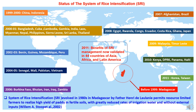In 1999–2000, this method was adopted in China and Indonesia, and slowly spread to Bangladesh, Cuba, Cambodia, Gambia, India, Laos, Myanmar, Nepal, Philippines, Sri Lanka, and Thailand. In 2002–2003 it was introduced in Benin, Guinea, Mozambique, and Peru. By 2004–2005, it was introduced in Senegal, Mali, Pakistan, and Vietnam. In 2006, it was studied in Burkina Faso, Bhutan, Iran, Iraq, and Zambia. In 2007, it was adopted in Afghanistan and Brazil.